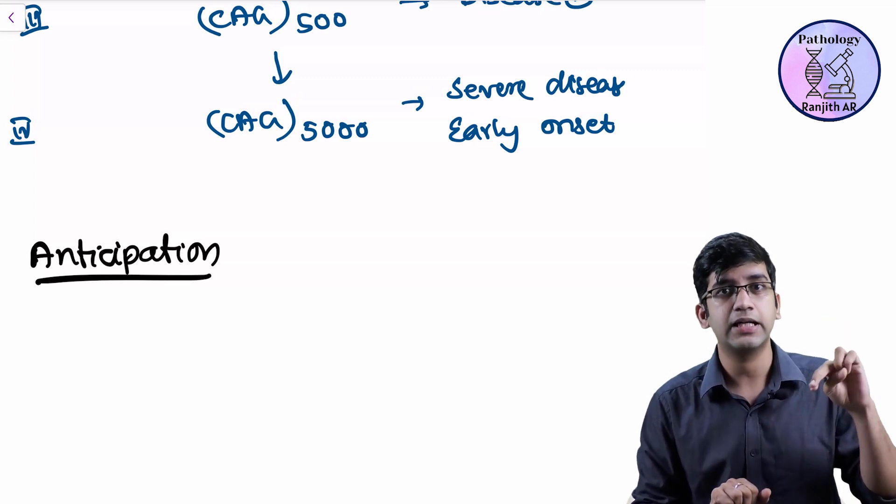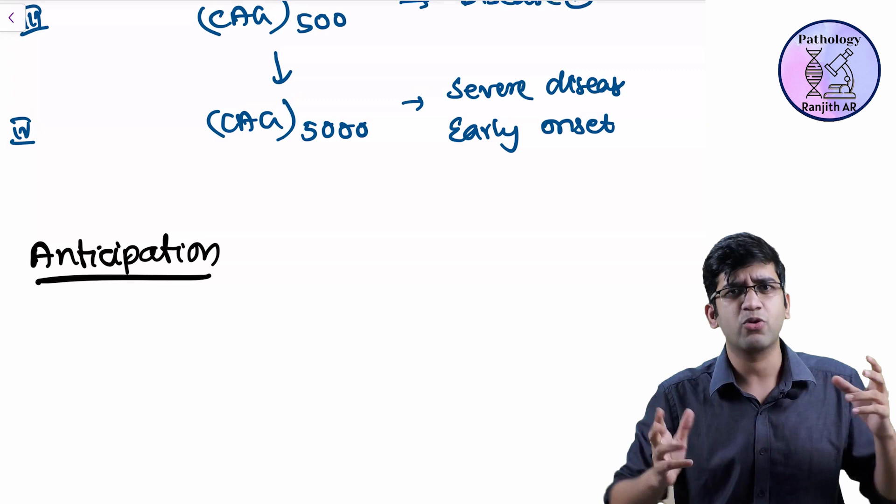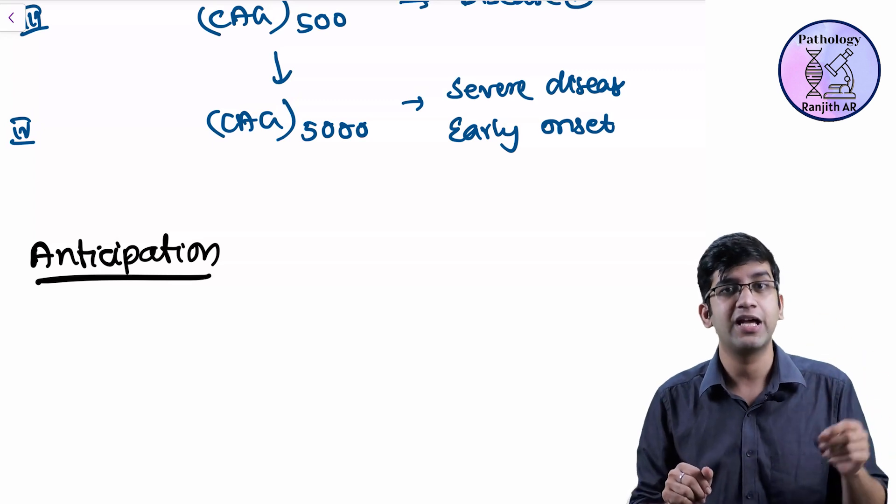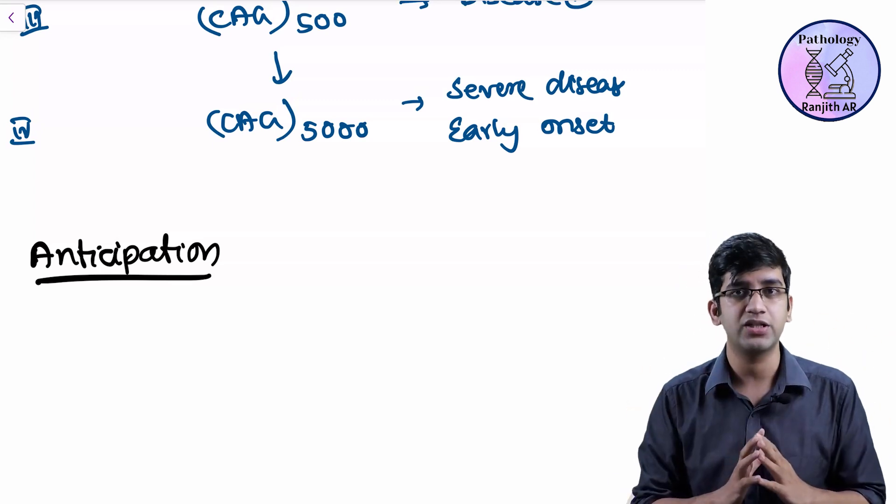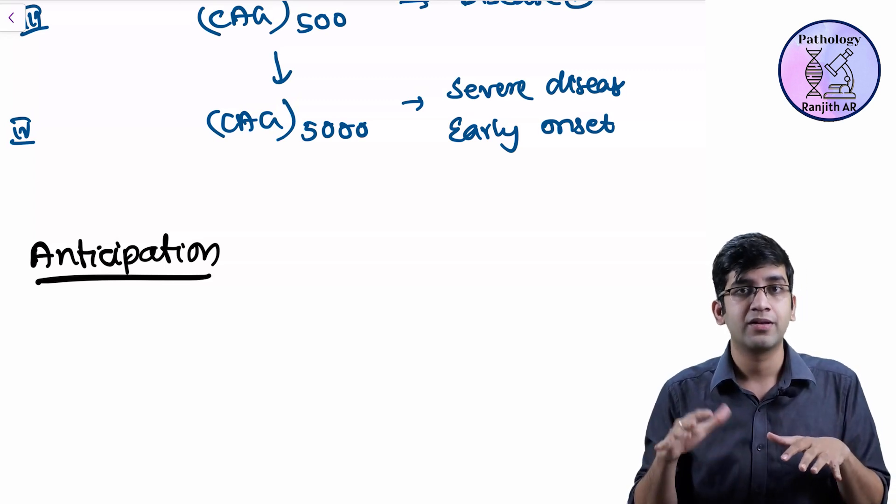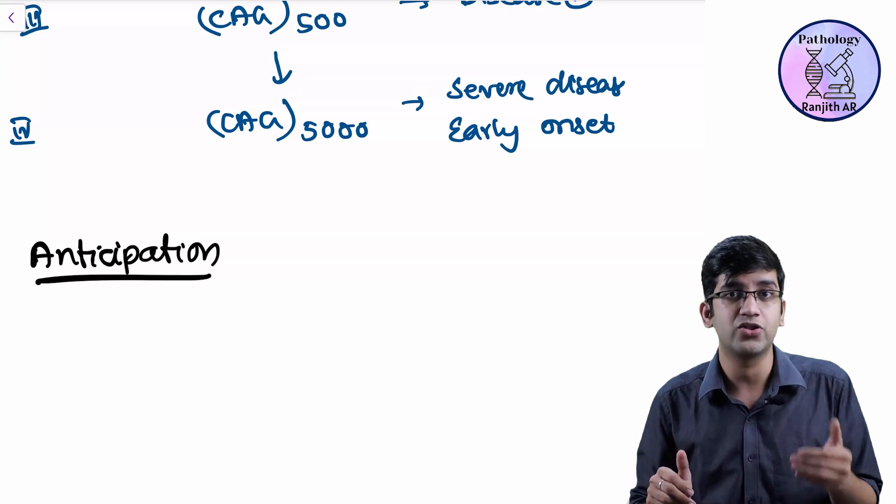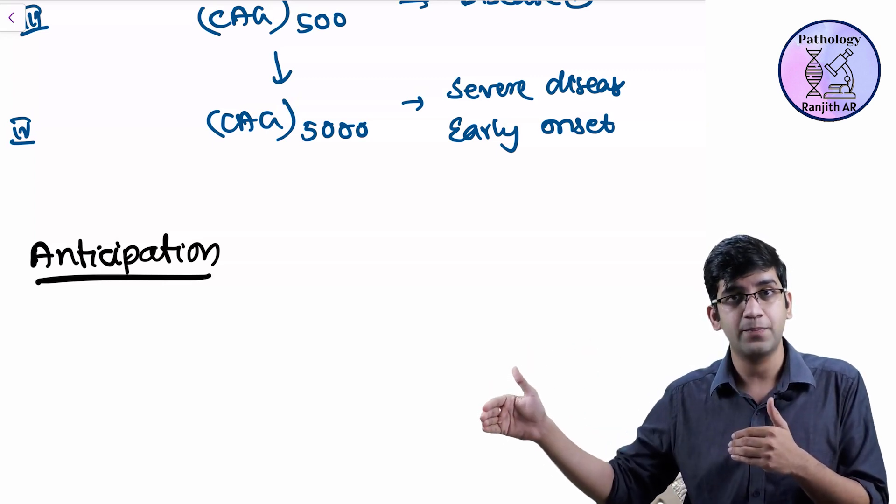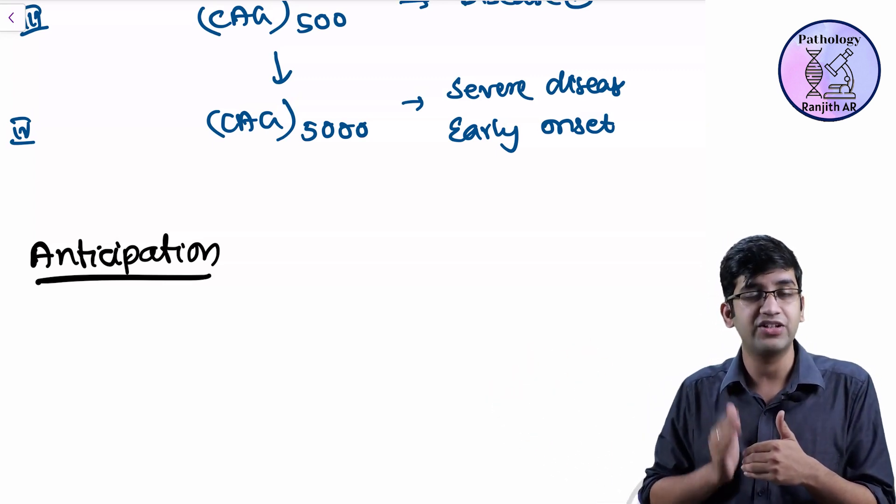They would have told in that series that her mother or father, I'm not exactly sure, also had Huntington's and died of Huntington's around 50 years of age. And she is having tremors now at 30 approximately years of age. 50 years died, now at 30 having a symptom.